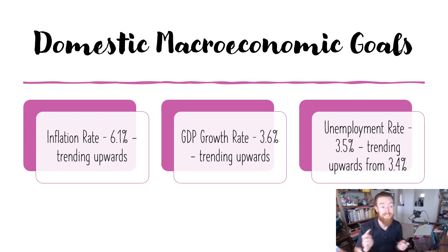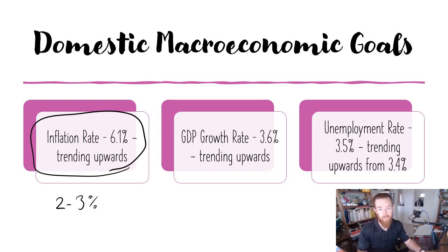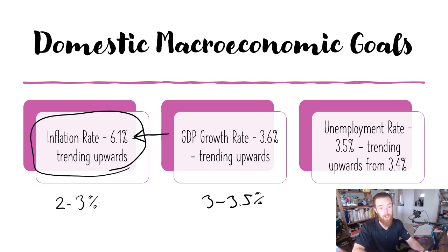So where are we at with the inflation rates? We're currently at 6.1% for inflation and it's trending upwards. With our target band being 2-3%, that is obviously well outside of that band. With strong sustainable economic growth, our real GDP growth rate is currently 3.6% and our goal is 3-3.5%. So we're pretty close to that, a little bit beyond it. What you might talk about is the unnecessary inflationary pressures — that could be a reason why the goal of strong sustainable economic growth is not being achieved right now.